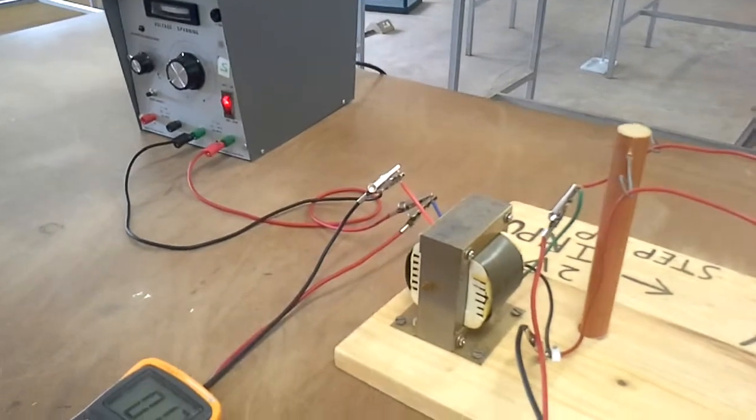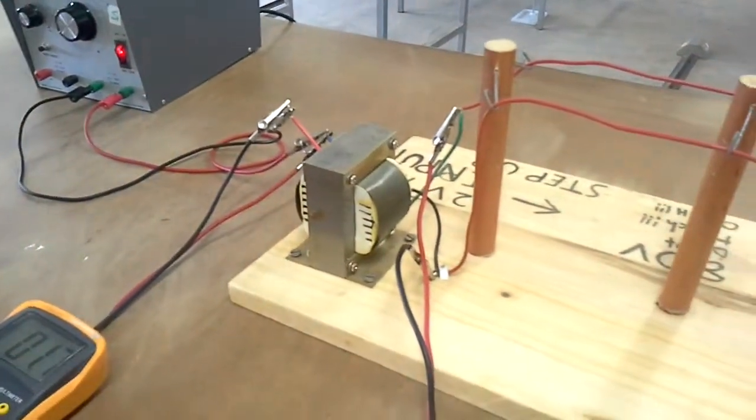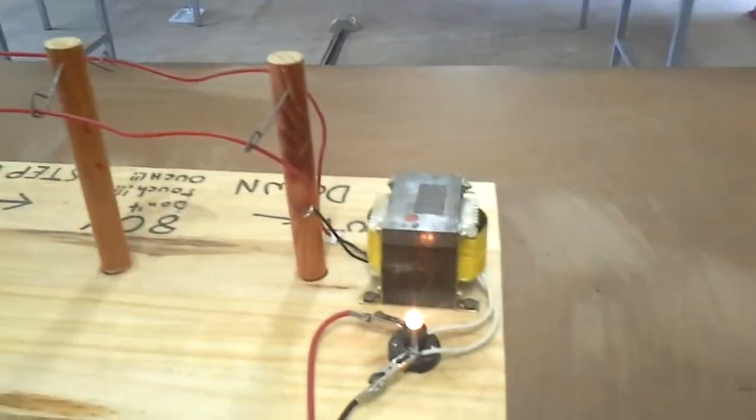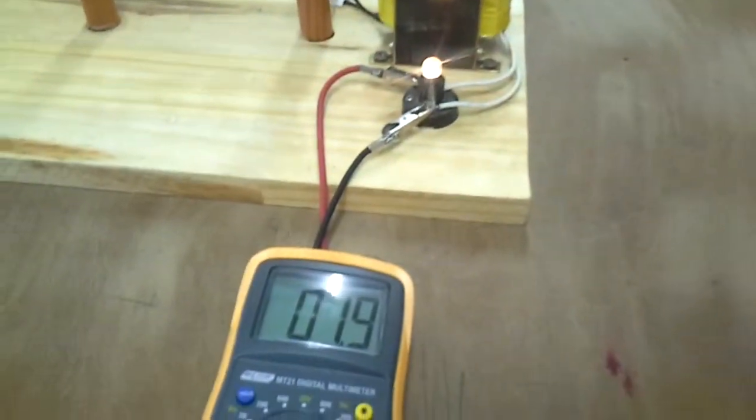We've got a low voltage going into the transformer that's becoming a much higher voltage as it goes along the pylons and then finally step back down.